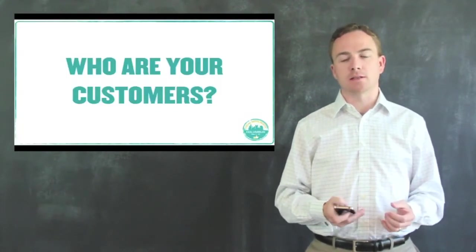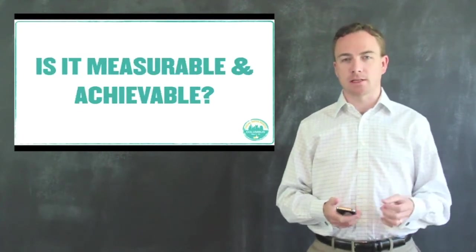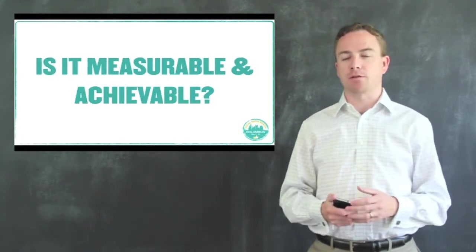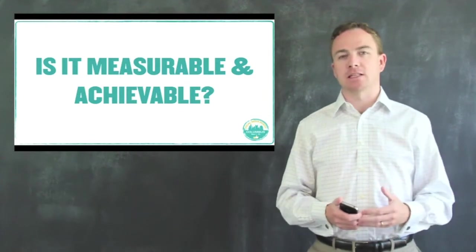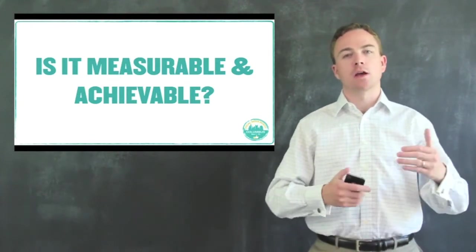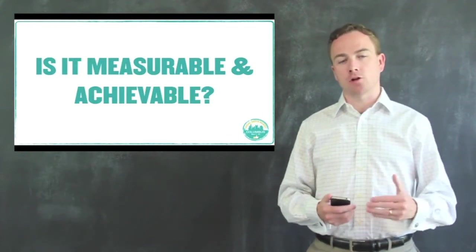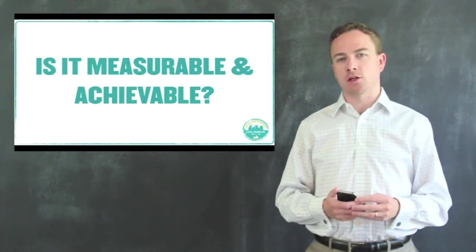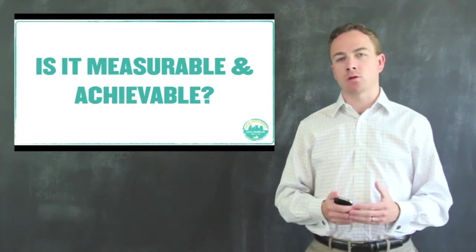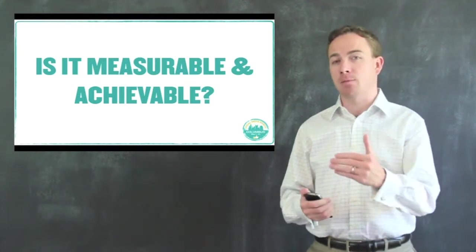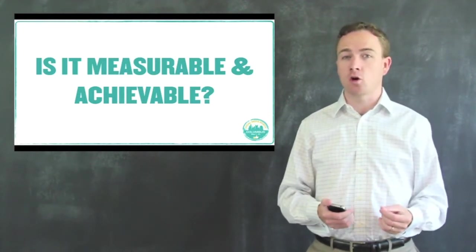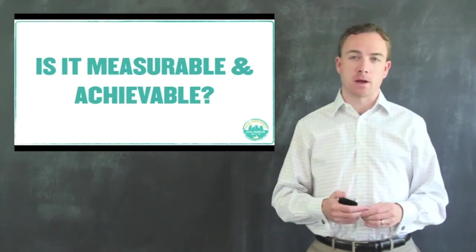The next thing you've got to bear in mind is, is it measurable and is it achievable? So some of the examples I gave previously on reducing an advertising spend, reducing the amount of physical queries that come in through telephone or in person, they're measurable and they're achievable. Is your goal measurable and is it achievable? If we do really want to go down that road of getting a return on investment and be able to measure what we do, we need to know how we put in place methods to measure this.